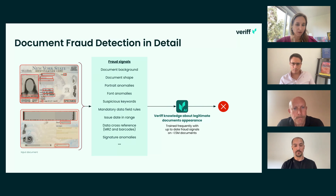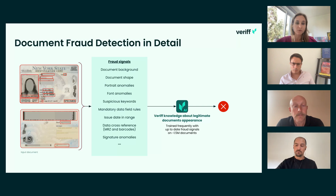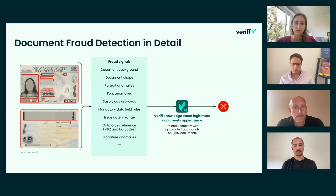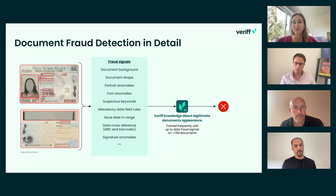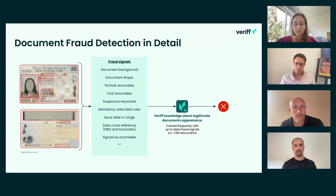One additional benefit of computing all the signals separately is that when we find fraudulent documents, we often use our internal operations teams to validate them. If we can already point out that the document background is wrong, or that there are font problems or date issues, then they already know where to focus. Otherwise, they might miss those signals. So we are also helping our teams understand better what's going on.